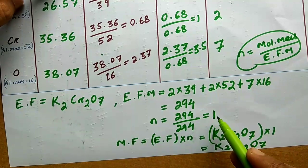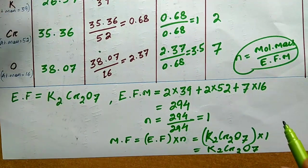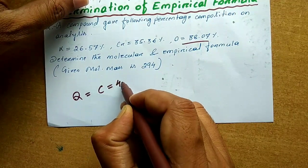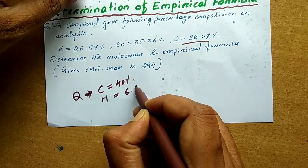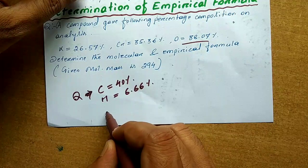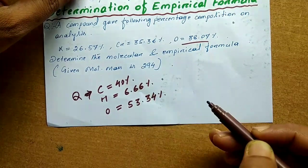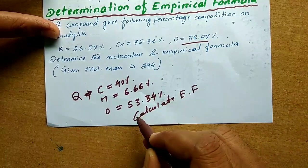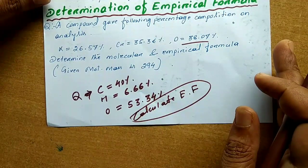Suppose in any problem you find the value of n is 2, 3, or 4, then just multiply with each element to get the molecular formula. Now I will give an example — write the answer in the comment box. Carbon equals 40%, hydrogen equals 6.66%, and oxygen equals 53.34%. Calculate the empirical formula.